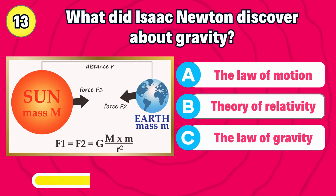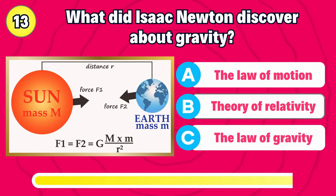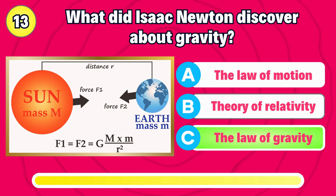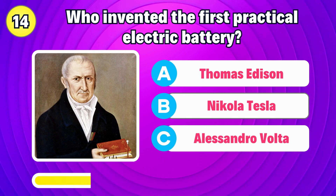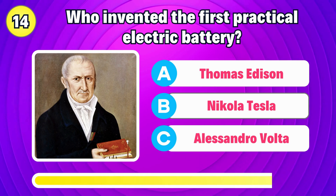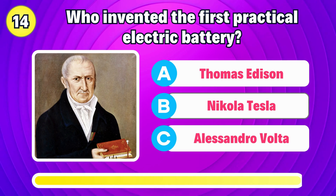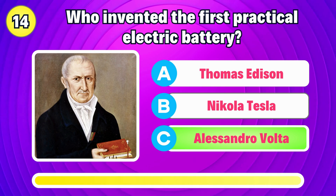What did Isaac Newton discover about gravity? Right, it's the law of universal gravitation. Who invented the first practical electric battery? The answer is Alessandro Volta.